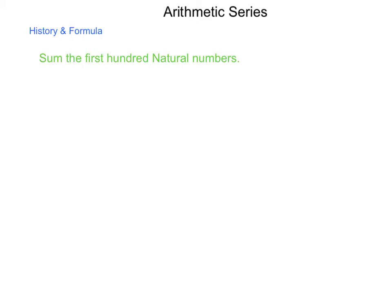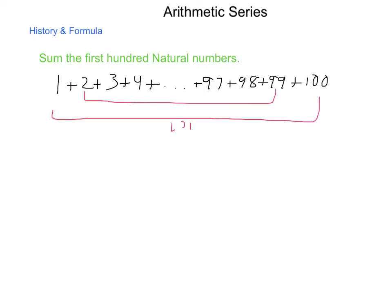he noticed a pattern that if he's adding one, two, three, four, and continued on, all the way up to 97, 98, 99, and 100. Now, when he began to add these items together, 1 and 100 made 101. 2 and 99 made 101. 3 and 98 made 101. 4 and 97 made 101, and that it constantly had this pairing system.